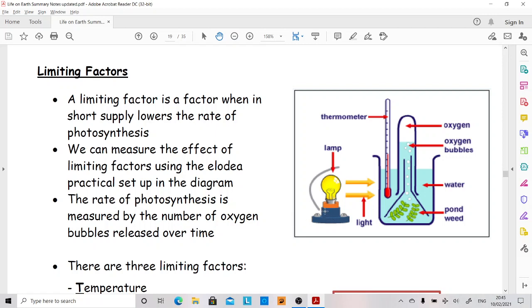So in the Elodea bubbler, you would put your lamp perhaps a meter away from this setup and you would count how many bubbles of oxygen are produced in a certain length of time. Then you might move your lamp to 80 centimeters away, let it acclimatize and then count how many bubbles of oxygen you get, and so on. And you would move your lamp nearer and nearer and measure how much oxygen you got.